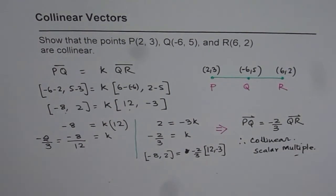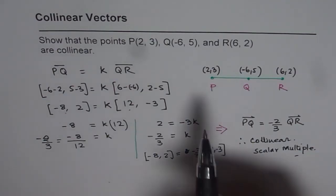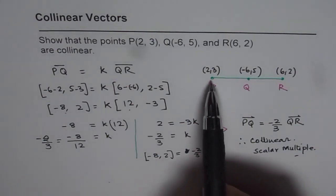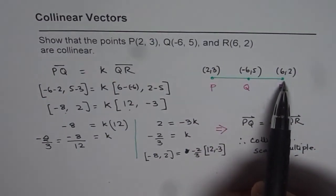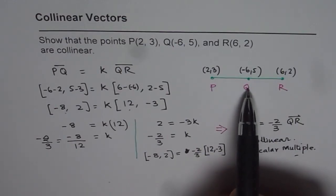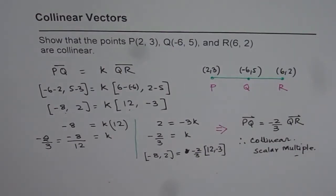So that is how you can show whether the given points are collinear or not. So given points are collinear if they lie on the same line. In that case, any two vectors, I could have also shown PR equals to some scalar multiple times QR. So either way you could have done and shown this. That's how you do it. Thank you.